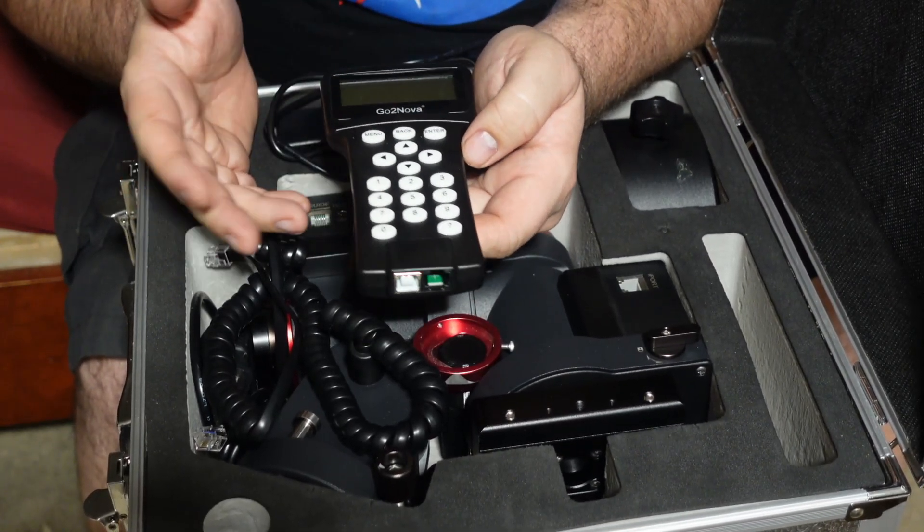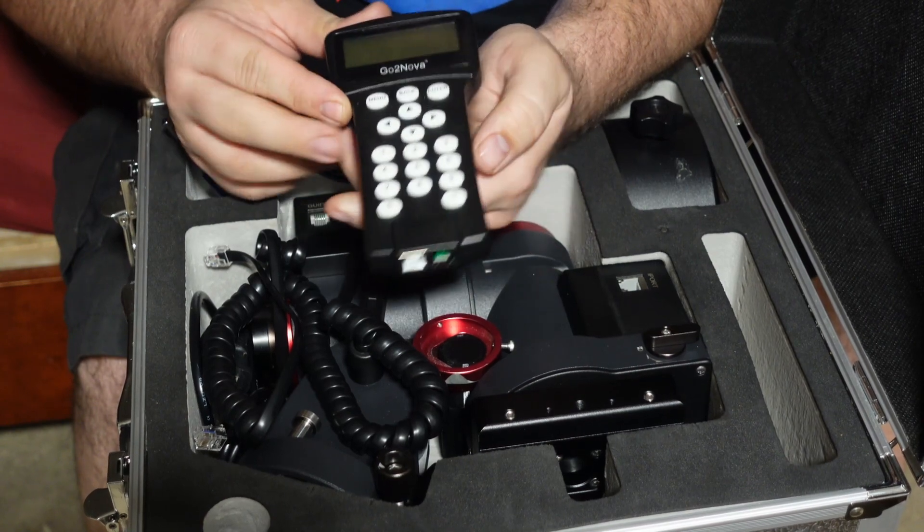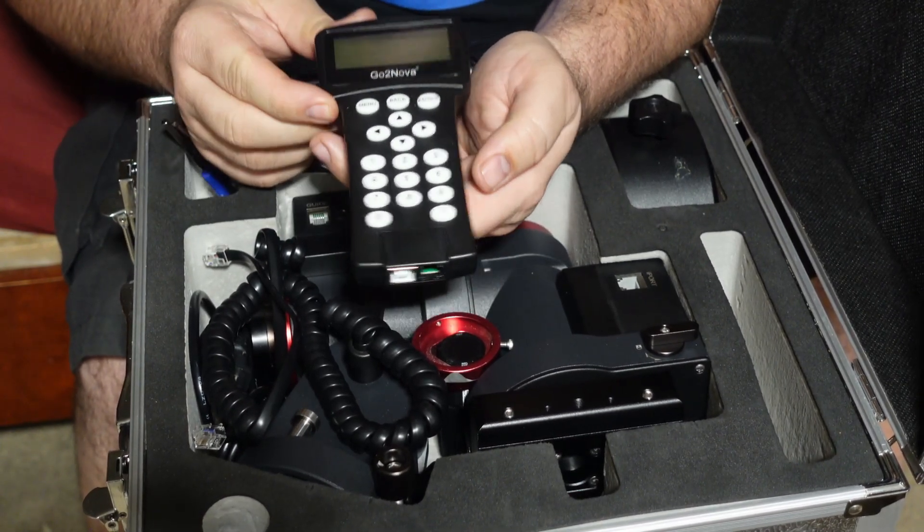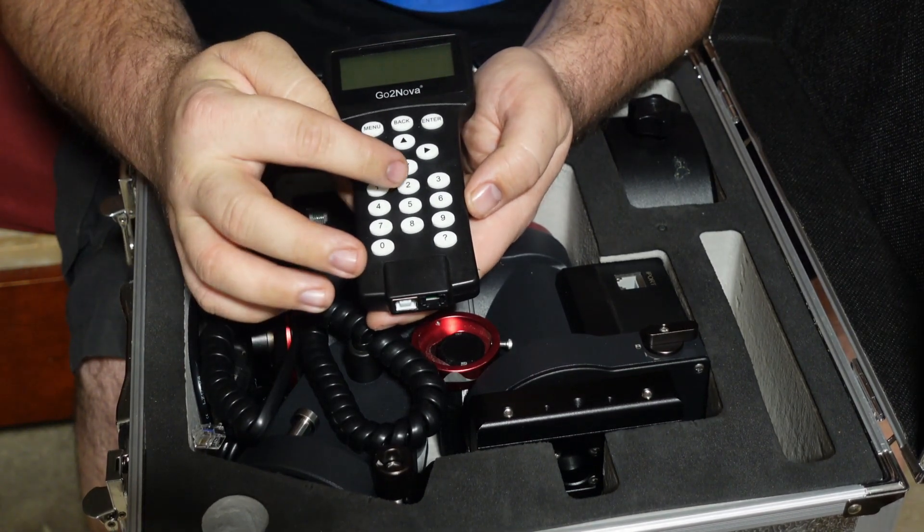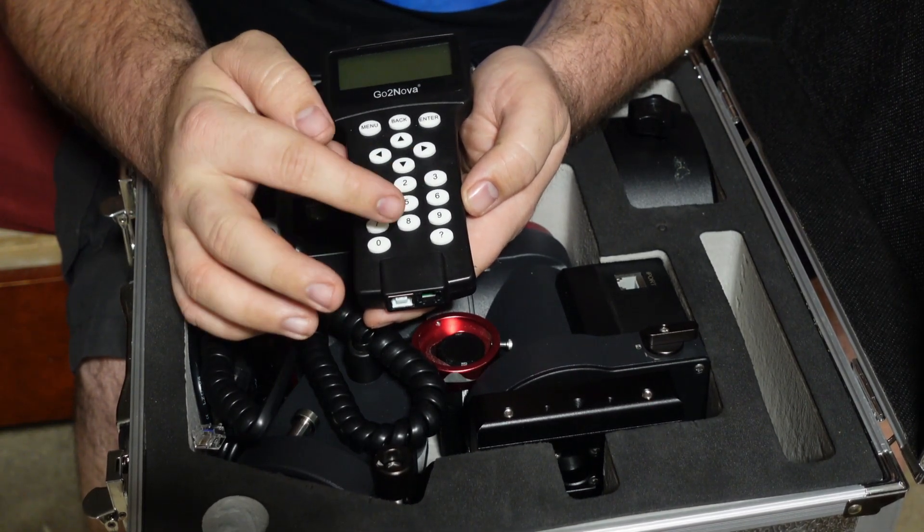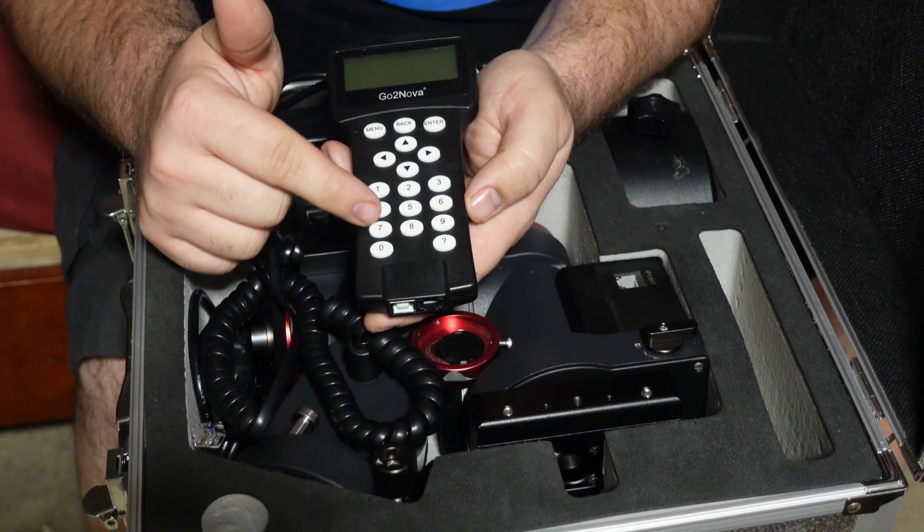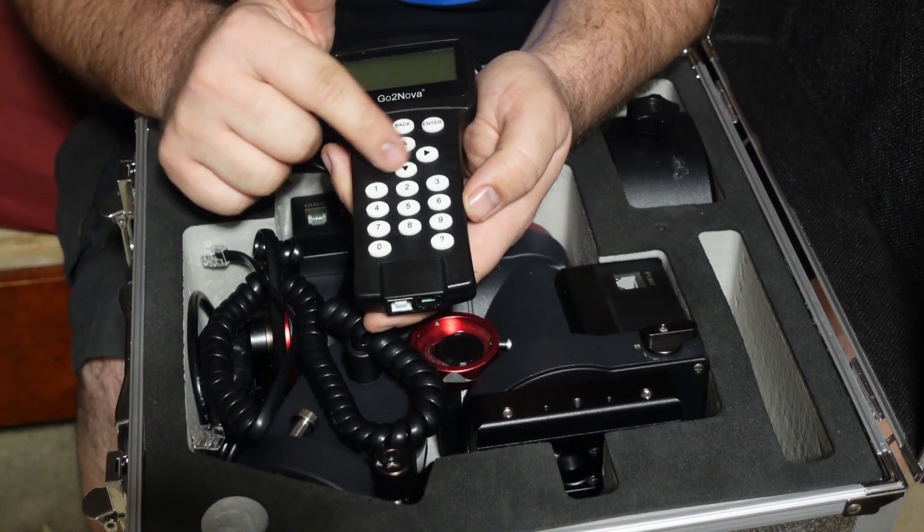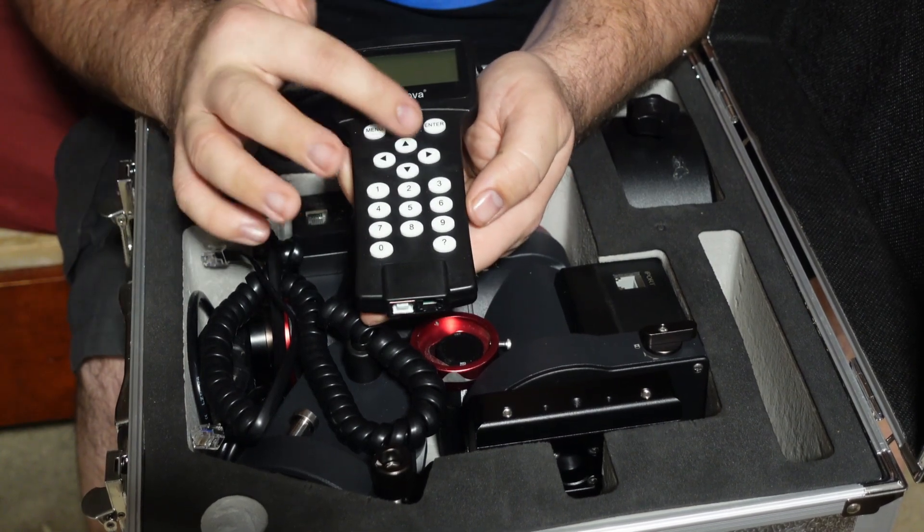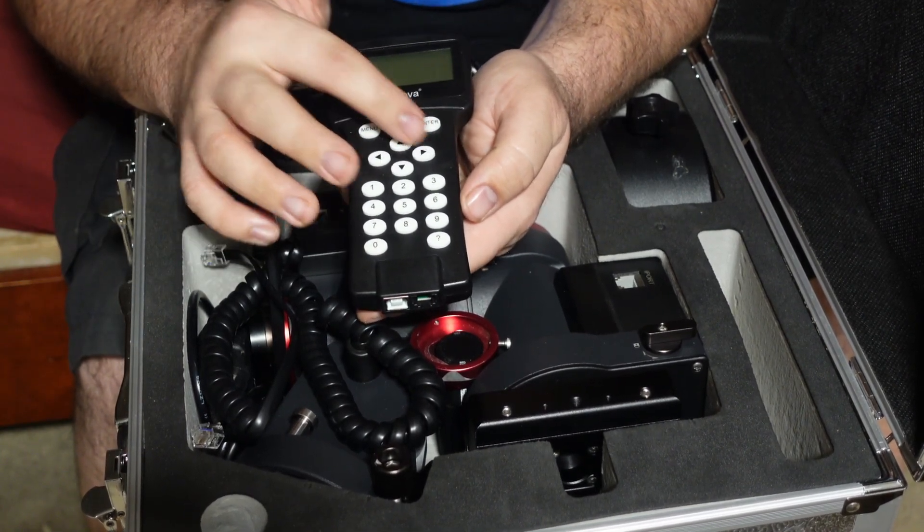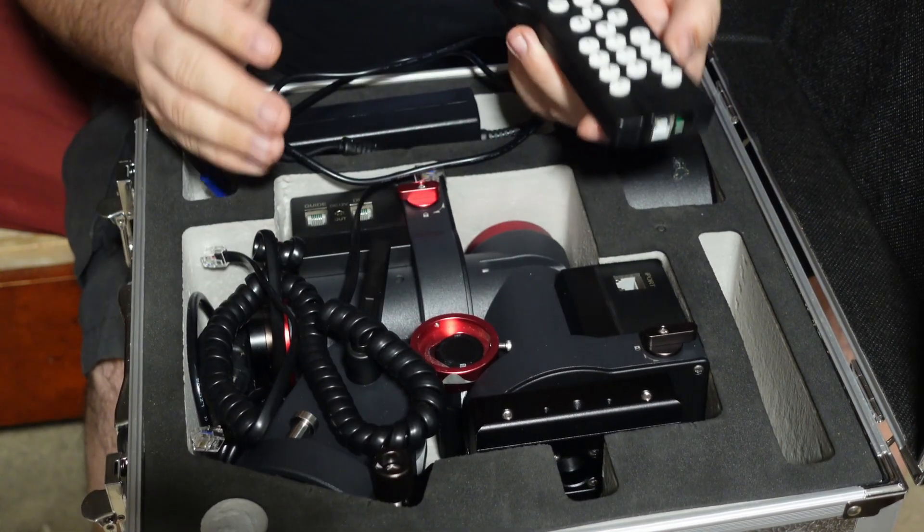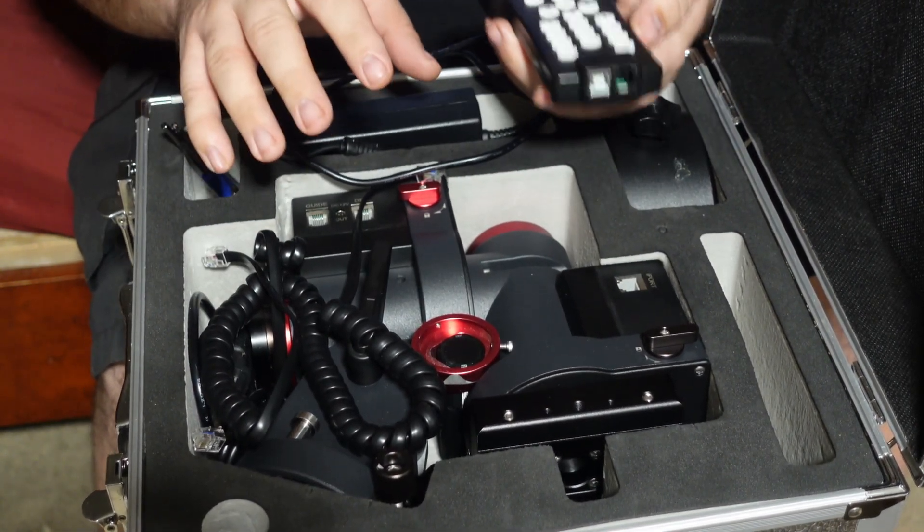Then we have our hand controller, which is a little bit different than the other ones but overall same kind of setup. For instance, the Celestron and the Sky-Watcher mounts - I'm used to moving with the 2, 6, 8, and 4 buttons, moving the actual selections of the menu. On this hand controller, this is used for not only moving the telescope but also going through the menus and stuff.